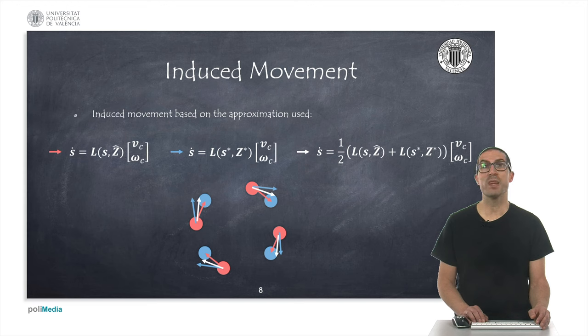On the other hand, the movement caused by the use of the second approximation is shown in the blue arrows. Both movements imply that the correction will perform a displacement and a rotation, even though we know this is a pure rotation situation.